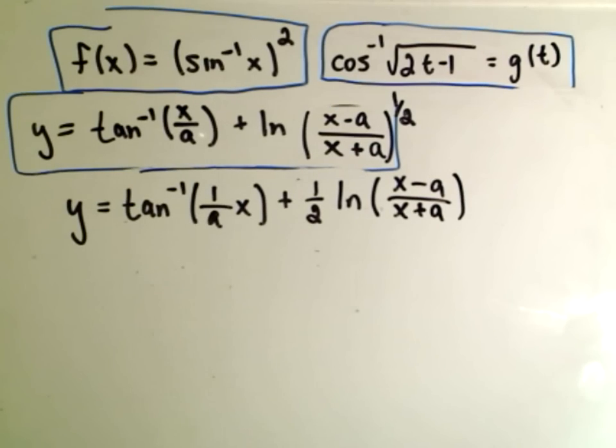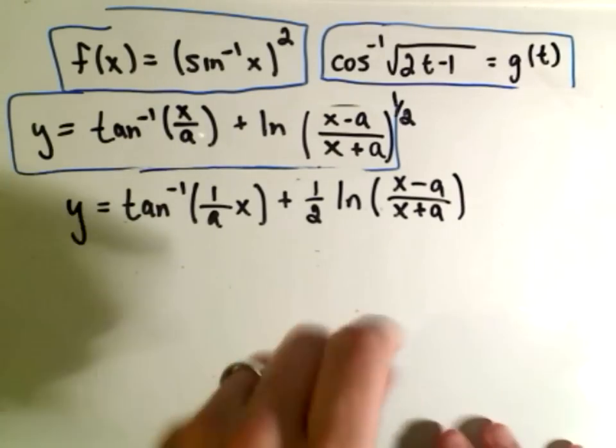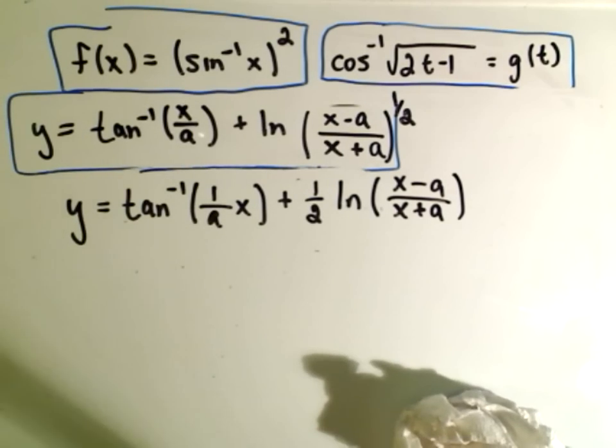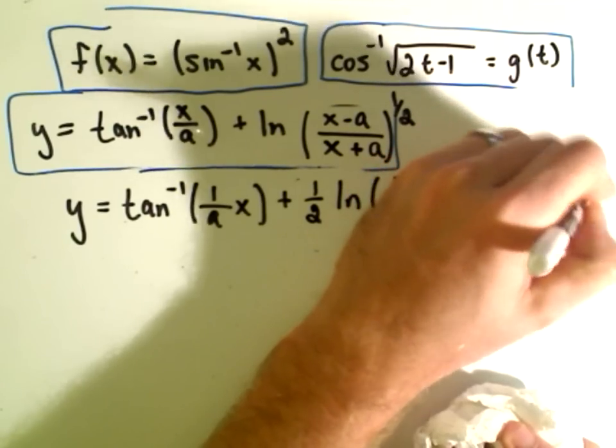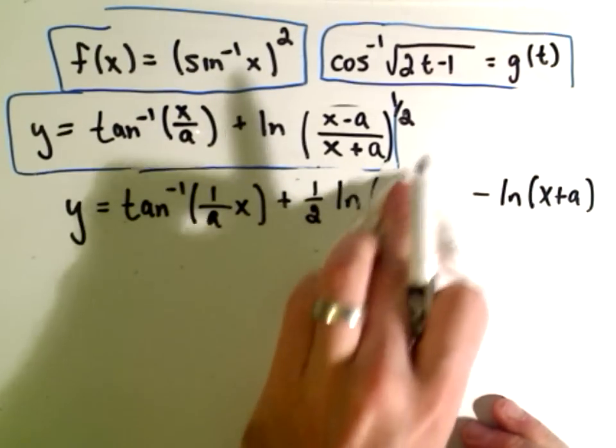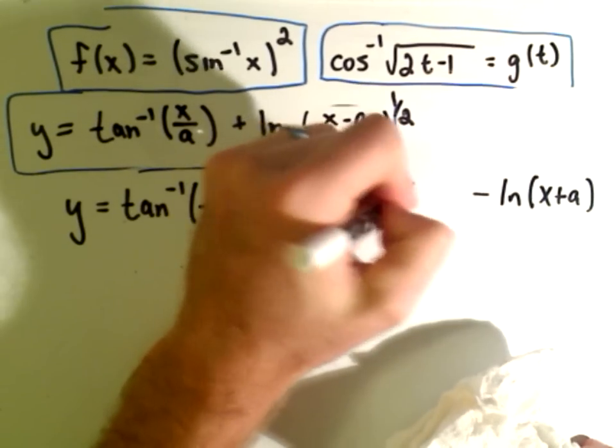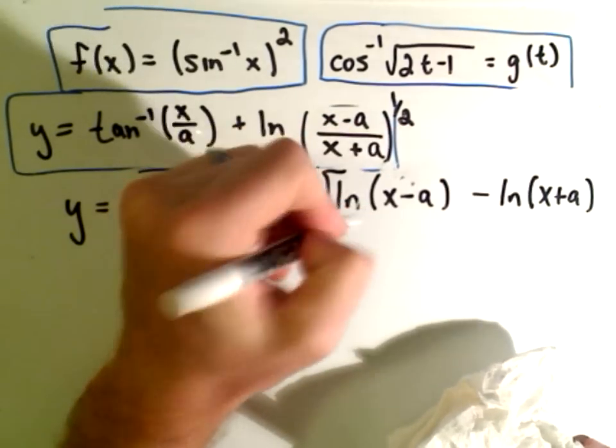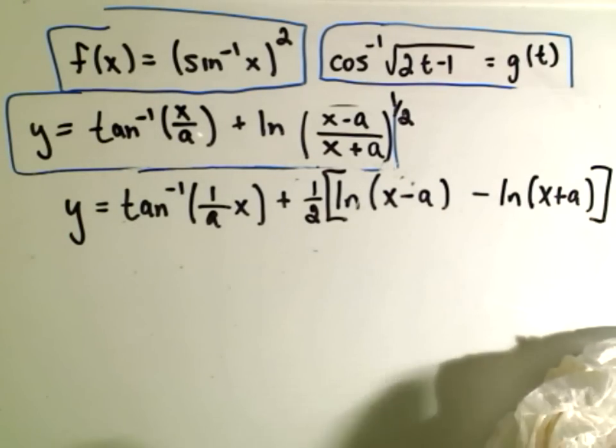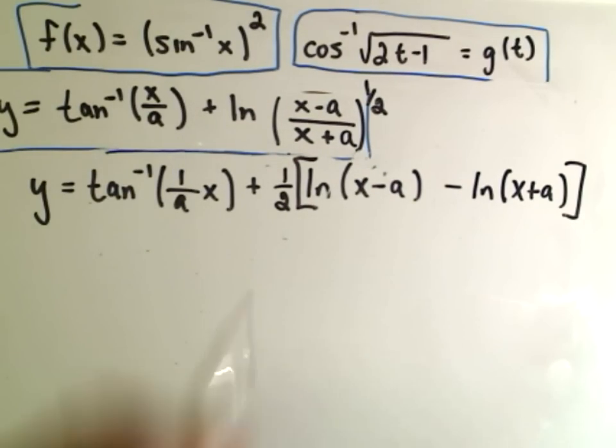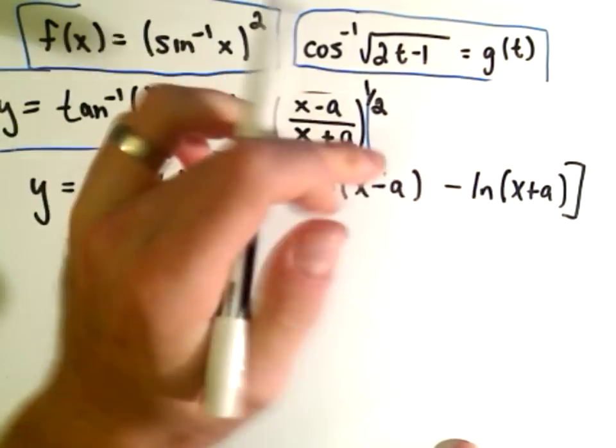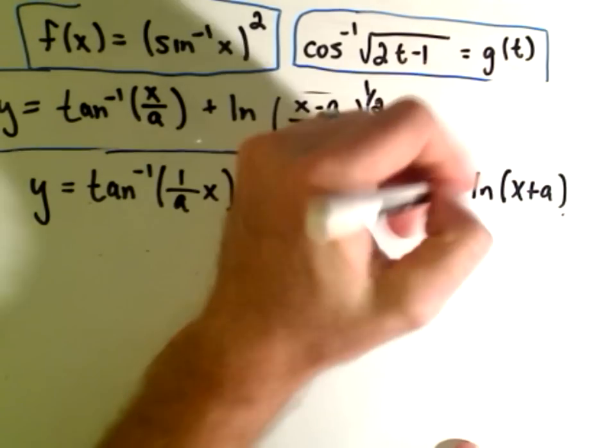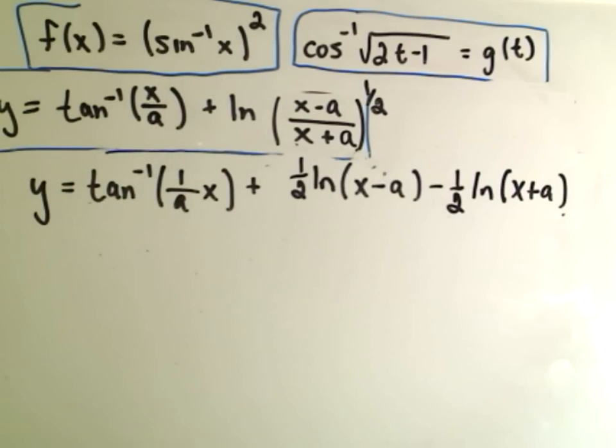But remember division with logarithms can actually turn into subtraction. So we can actually bust this thing up one more time. So I'm going to make this ln of x minus a minus ln of x plus a when I get rid of the denominator. But then also remember this 1 half is now going to have to get distributed to everything. So we'll have to be careful about that. So let's go ahead and do that. We'll get 1 half the natural logarithm of x minus a, and then we'll get minus 1 half the natural logarithm of x plus a.